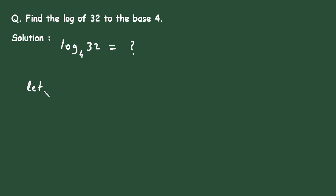Let log 32 to the base 4 equal x. We know the formula or rule of logarithm: log A to the base B equals log A divided by log B.